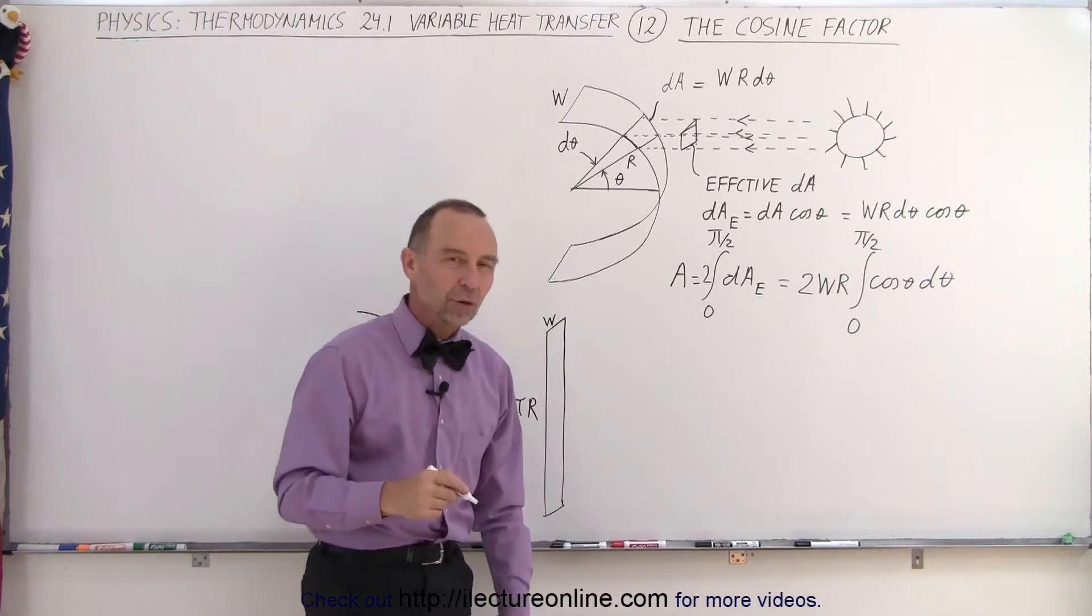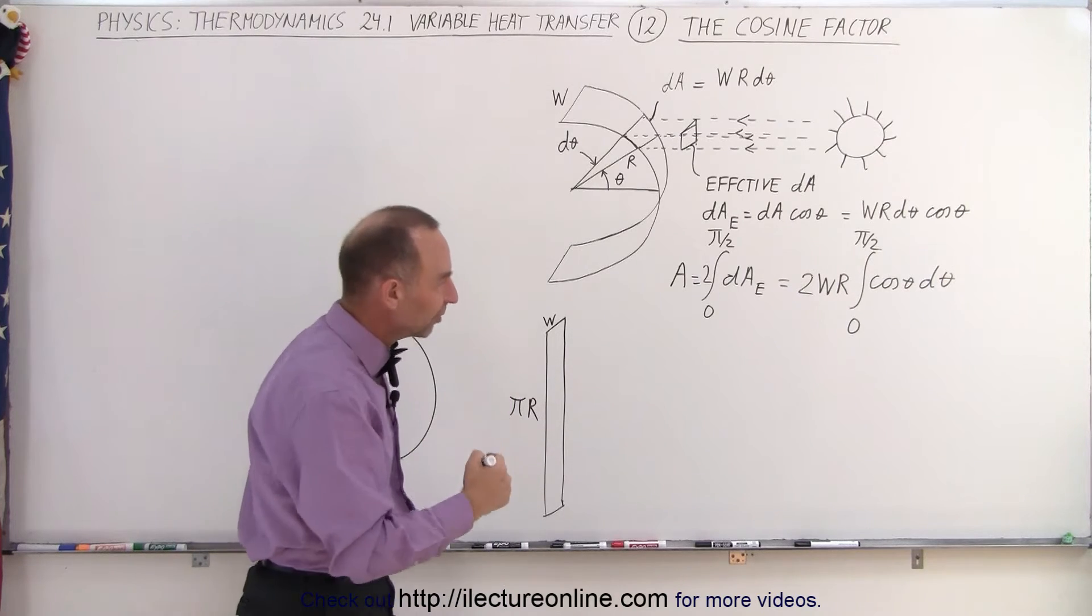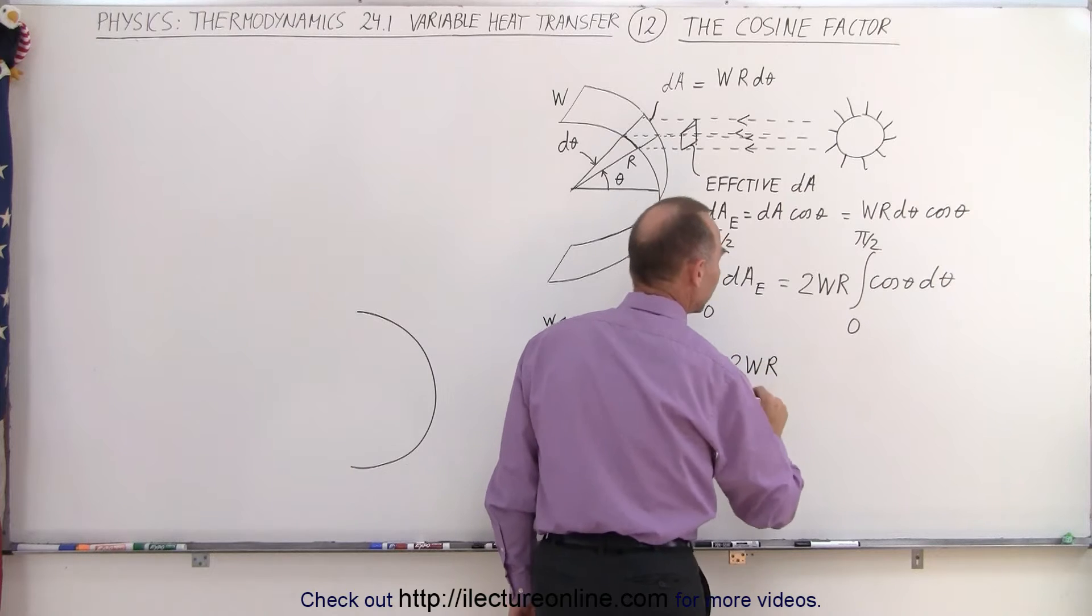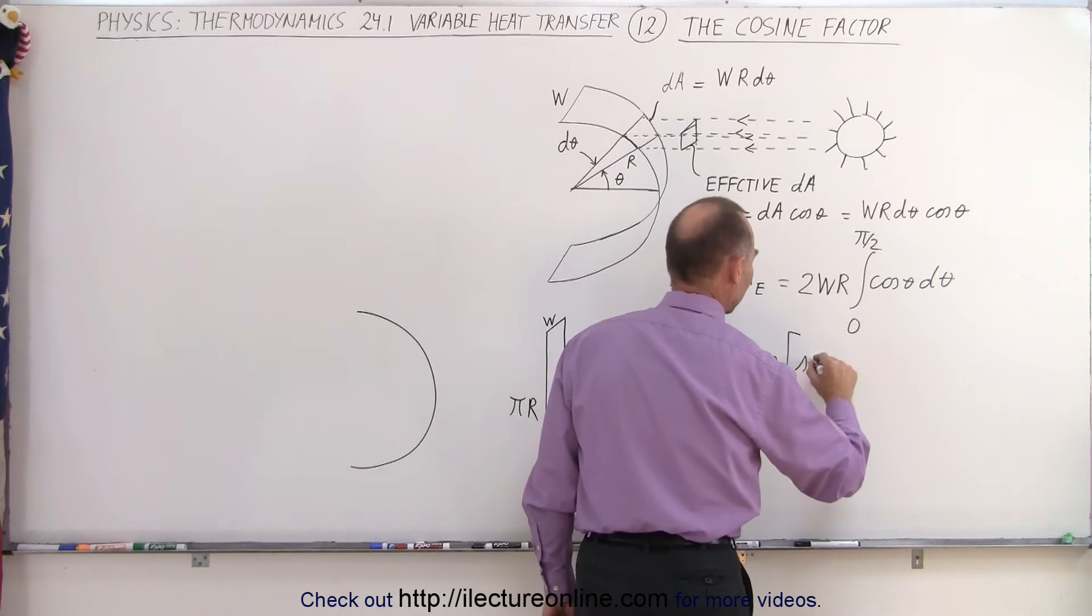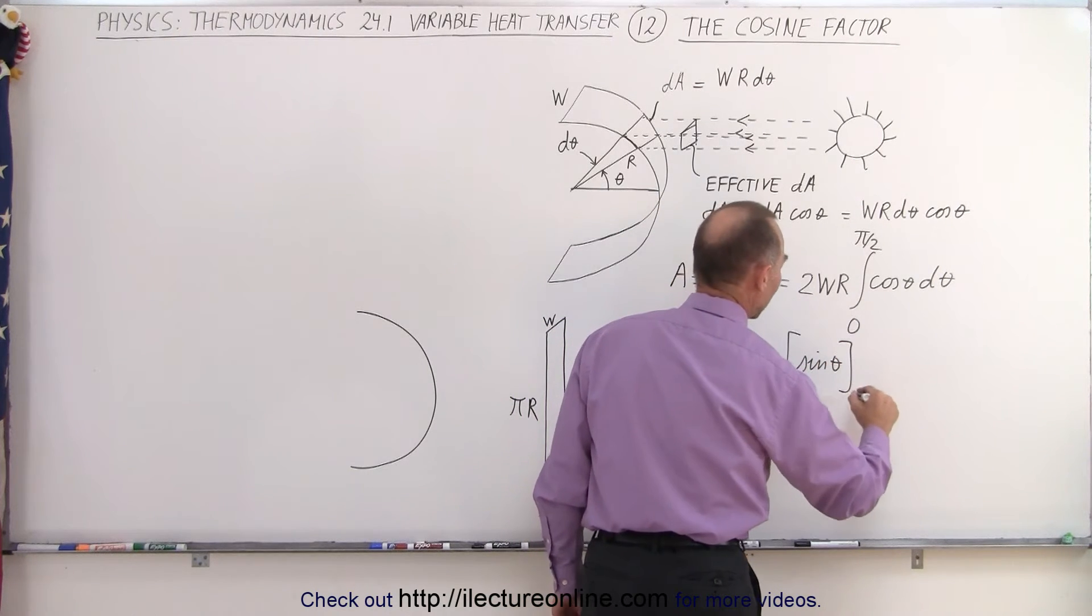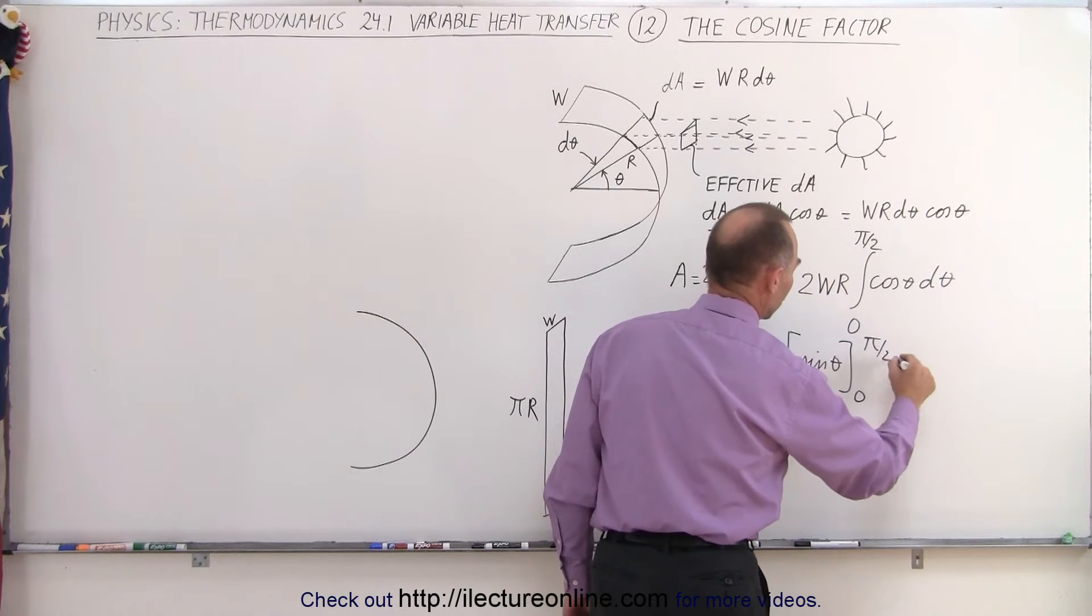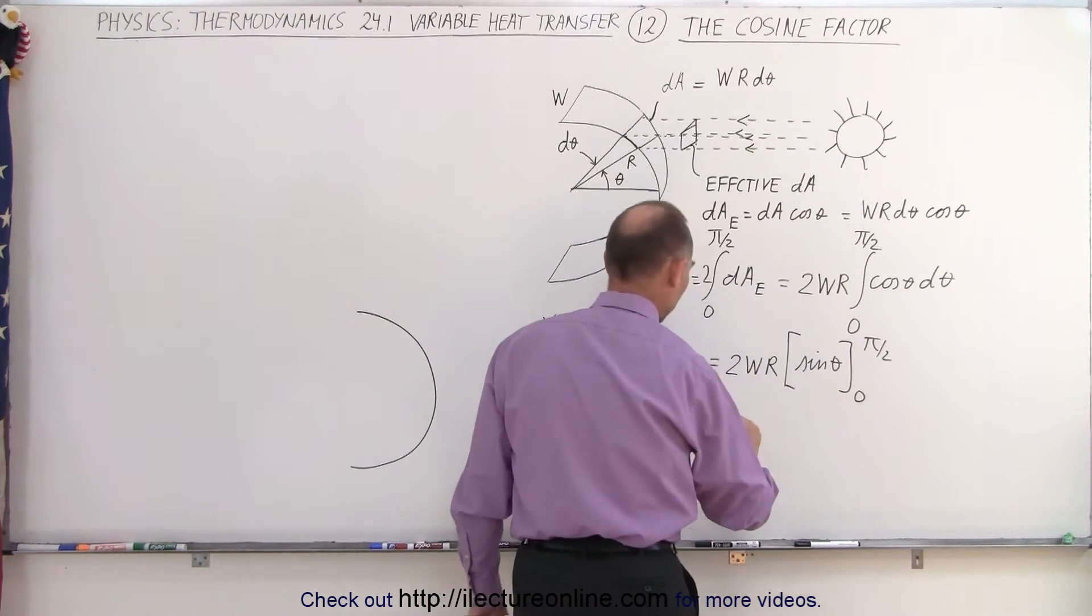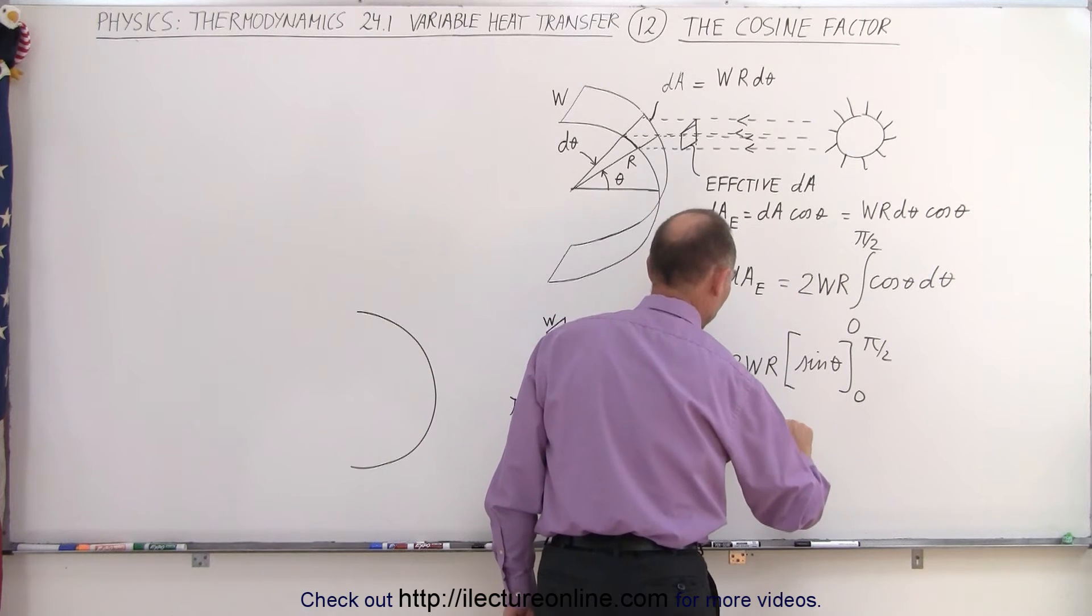Now the derivative of the sine is the cosine, therefore the integral of the cosine is the sine, so this becomes equal to 2 w r times the sine of theta evaluated from 0 to pi over 2. When I plug in the lower limit, I get 0, plug in the upper limit, I get 1, so this is equal to 2 w r.